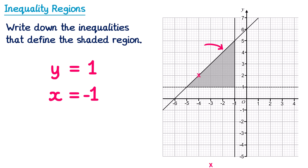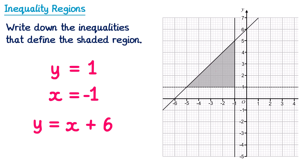We pick two coordinates on the diagonal line and draw a gradient triangle. The change in y is 1 and the change in x is 1, so the gradient is 1 ÷ 1 = 1. The y-intercept is at +6, so the equation of the line is y = x + 6. Now that we have all three line equations, we work out the correct inequality symbols for each.